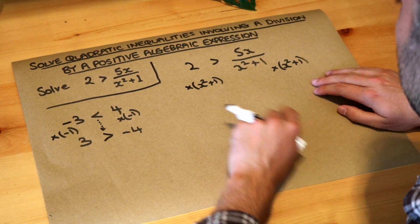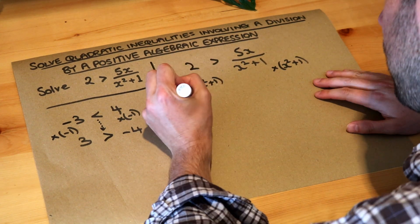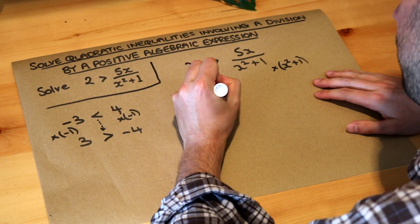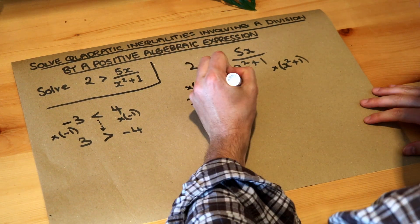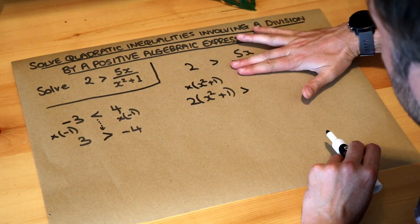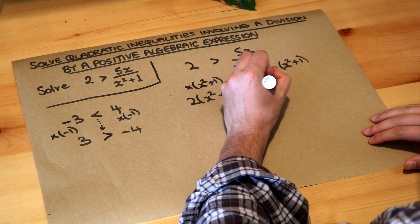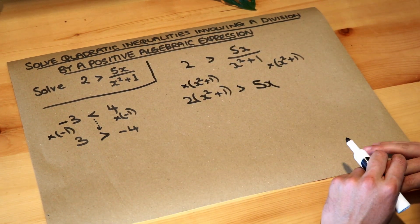So that's going to make this much simpler. I'm going to multiply the two by the x squared plus one. I'm just going to leave it in brackets for the moment. Two multiplied by the x squared plus one greater than, and when I multiply by the x squared plus one you're just left with 5x, and now we've got rid of the fractions. We're a bit happier.